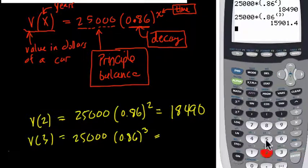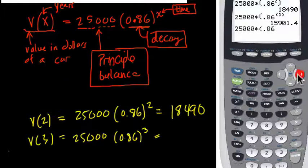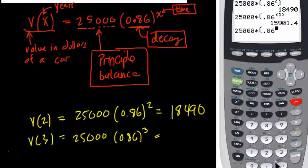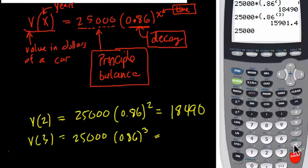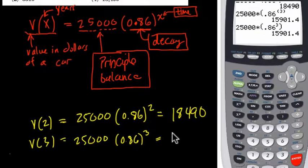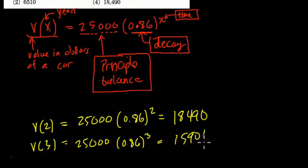Let me do it again. 25,000 times 0.86, and then, oops, oh boy, exponent, three, right arrow, let's see, it should give me the same answer, I believe, yes. So that's 15,901.4,